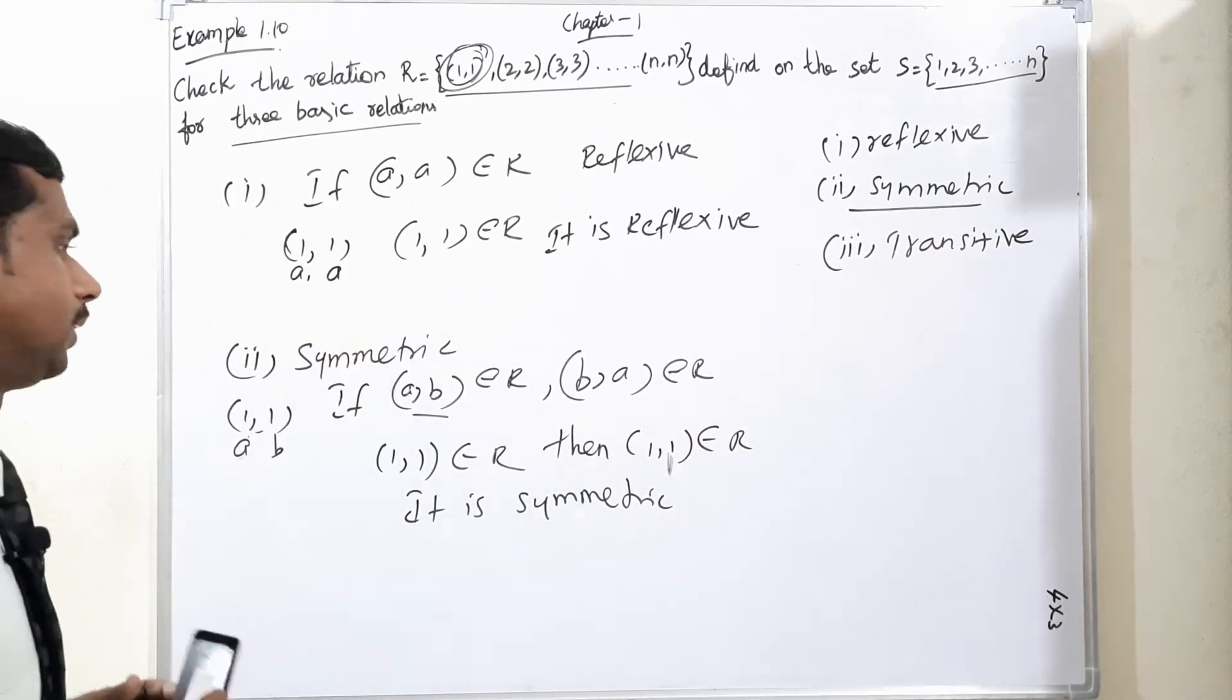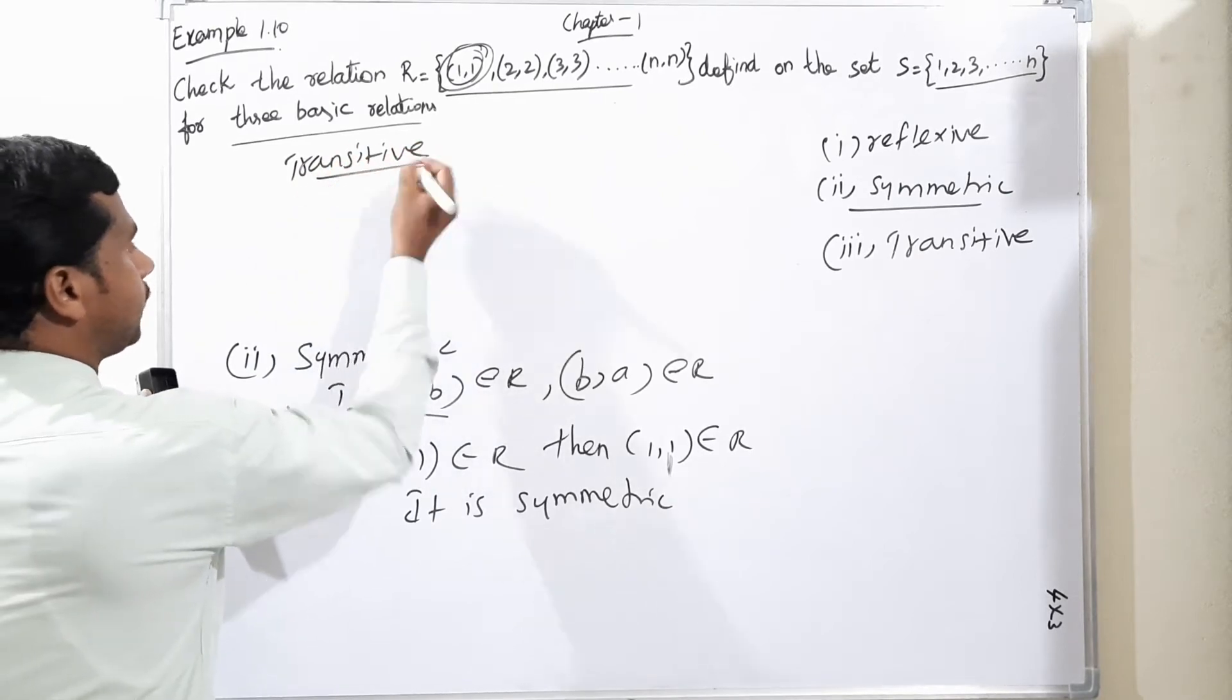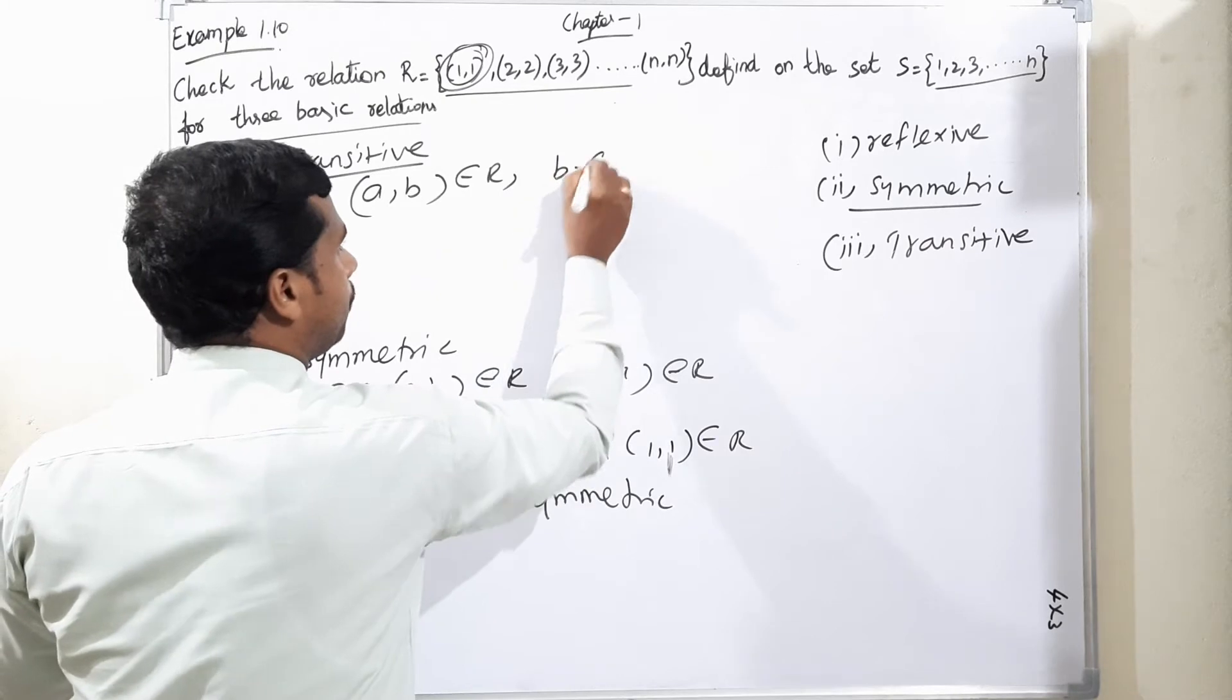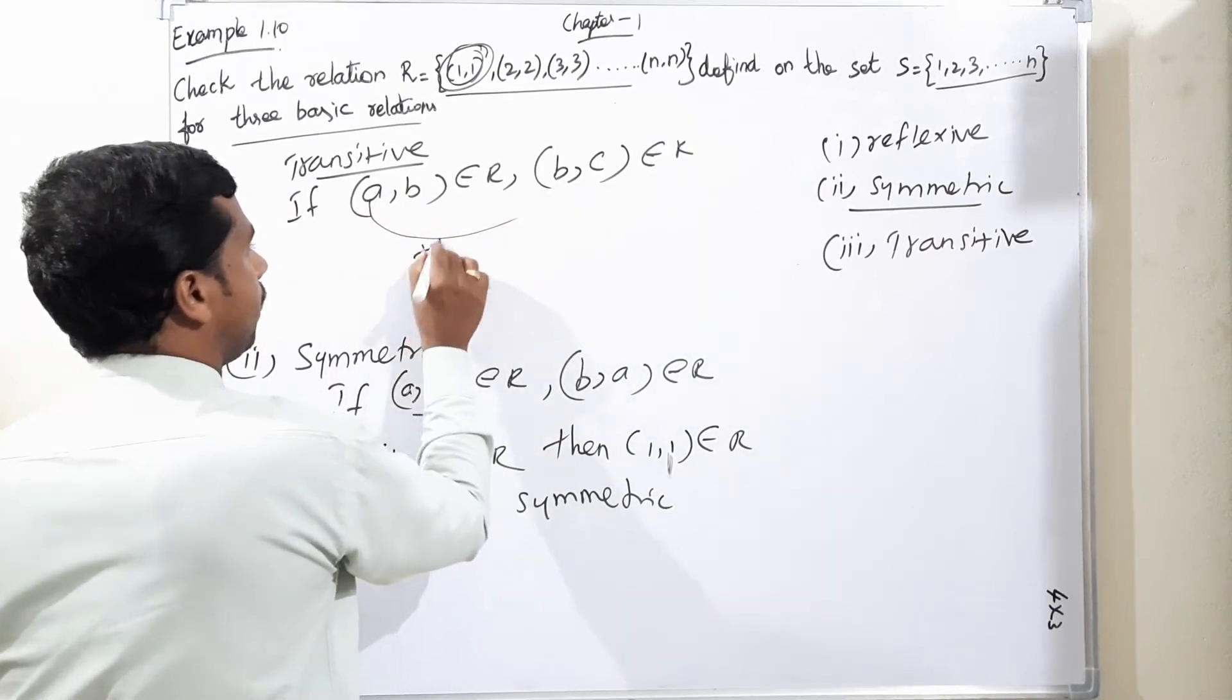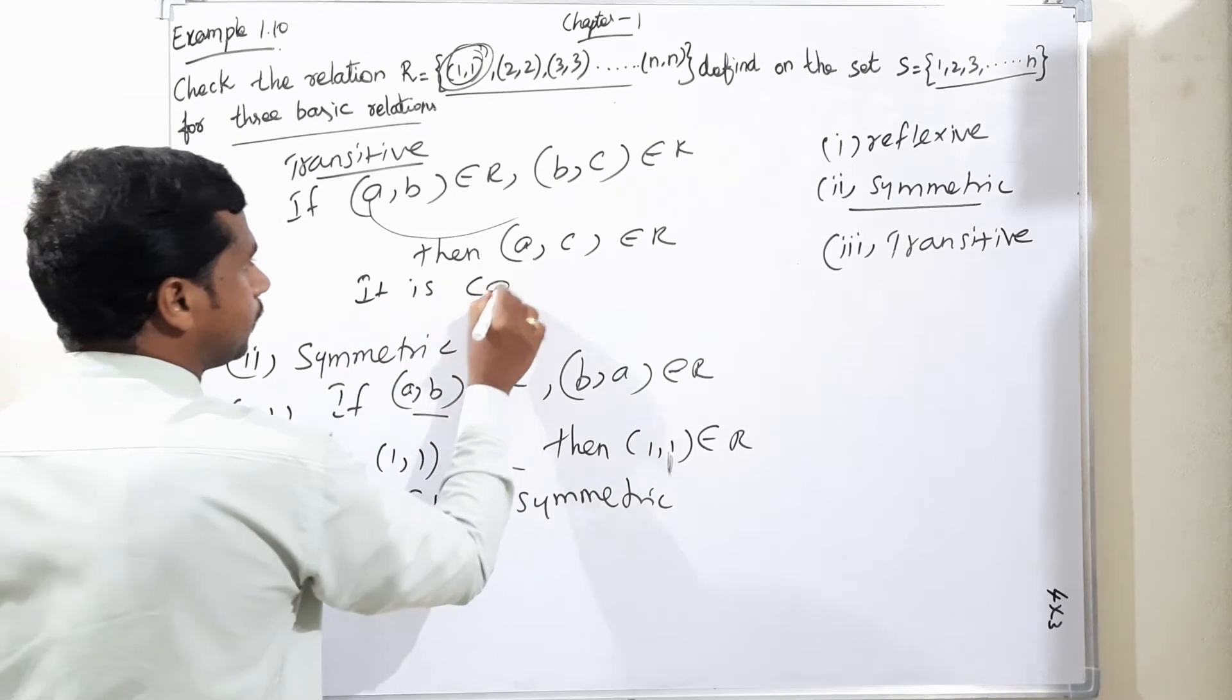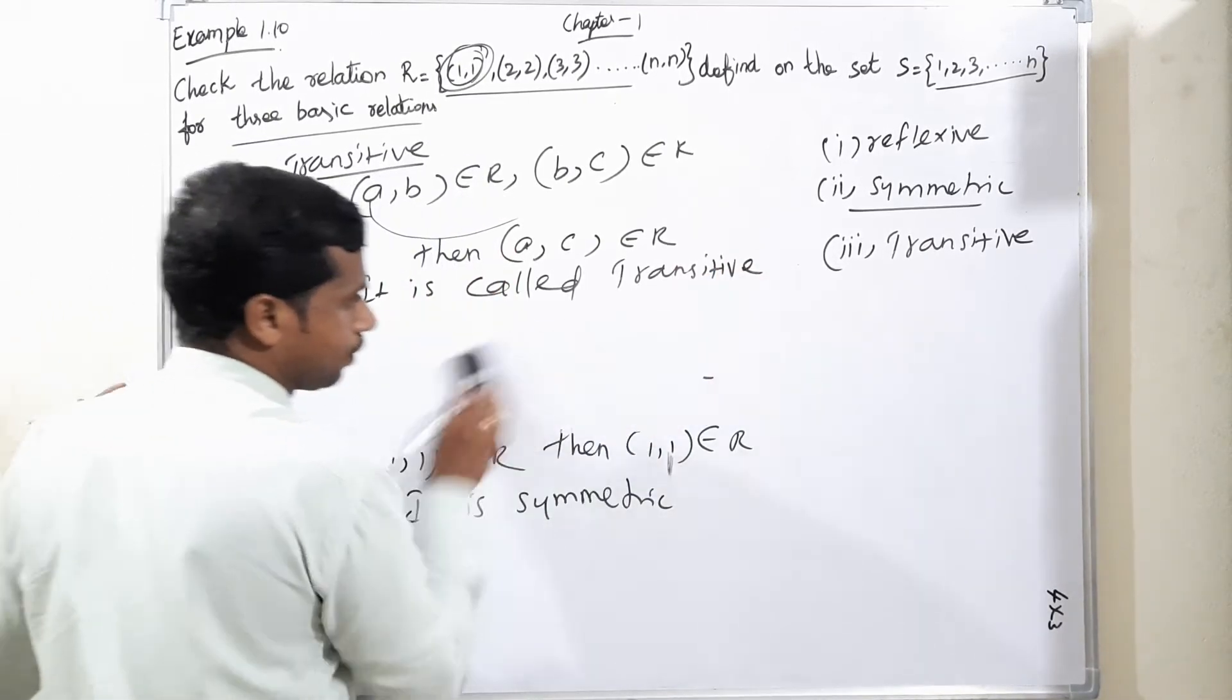I am moving to third one, transitive. The condition is: if (a,b) belongs to R and (b,c) belongs to R, then (a,c) belongs to R. It is called transitive. I will explain clearly.